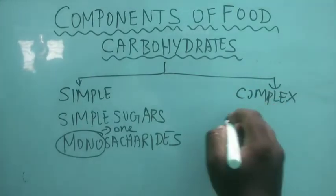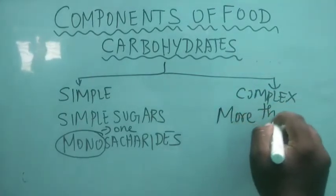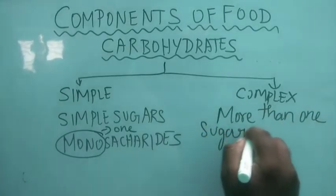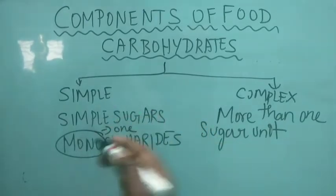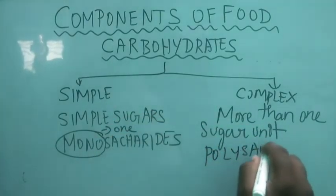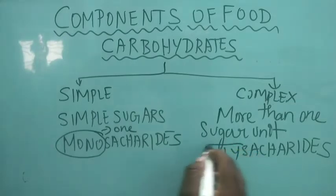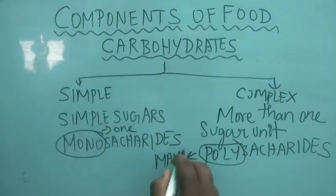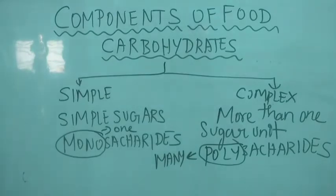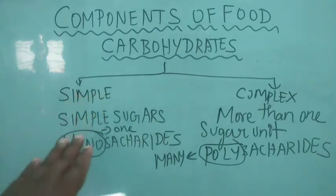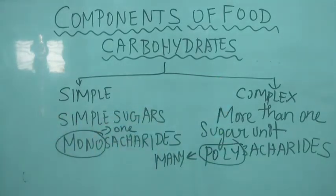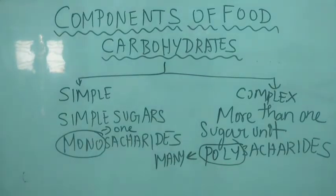Complex carbohydrate is made up of more than one sugar unit — technically called polysaccharides. Poly means more than one or many. So the core difference is: simple carbohydrates are monosaccharides (one sugar unit), and complex carbohydrates are polysaccharides (many sugar units).